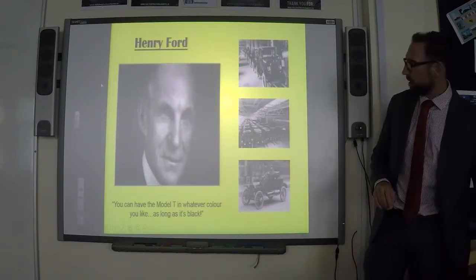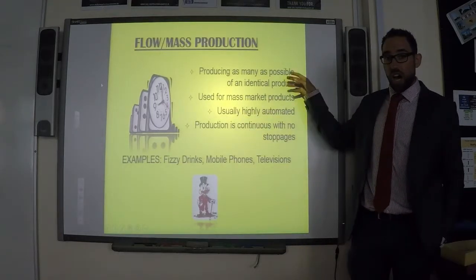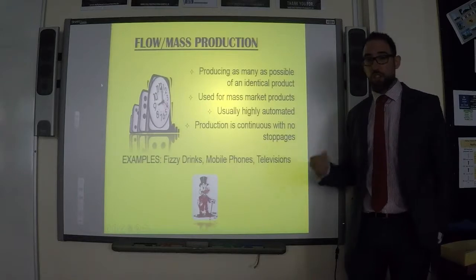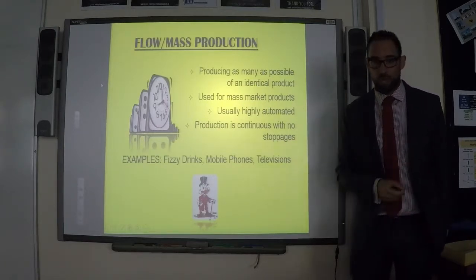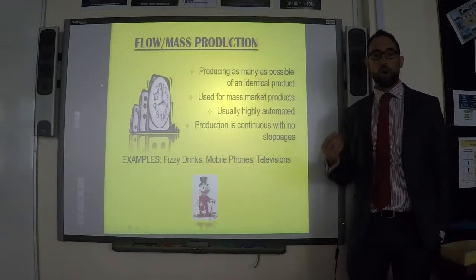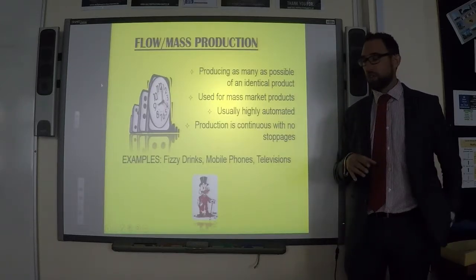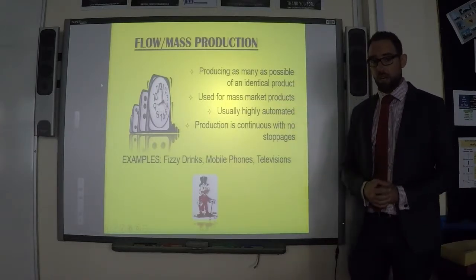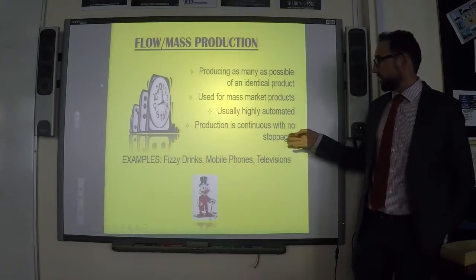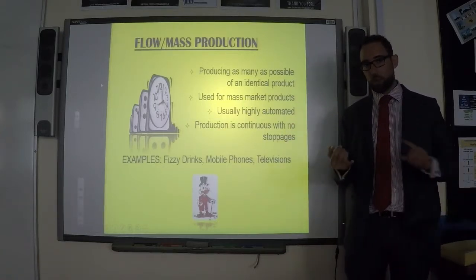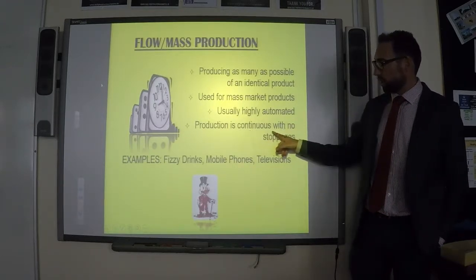With flow production we are producing as many products as possible. This is large-scale production where we make lots and lots of identical products that cannot be customized — it is used for the mass market. It is highly automated, meaning it uses machines rather than skilled workers. Machines cannot be changed very easily — they are fixed and rigid — so the products are all the same. It is continuous production: machines can work 24 hours a day, 7 days a week, 365 days a year without breaks.